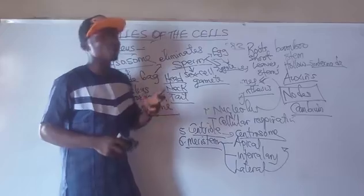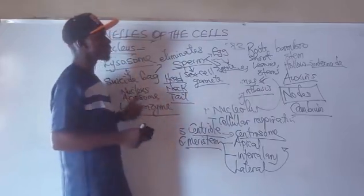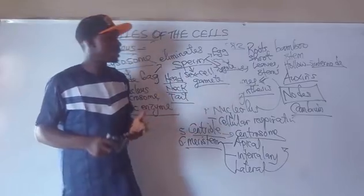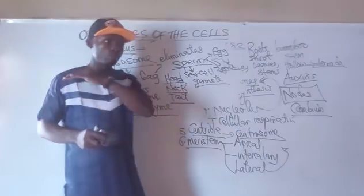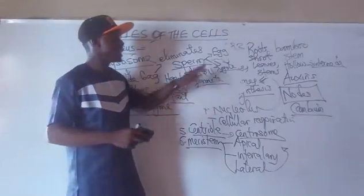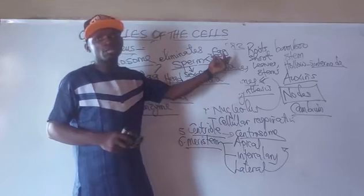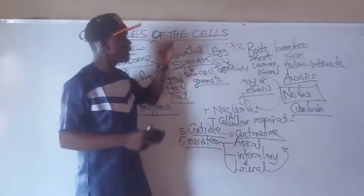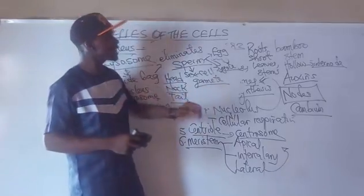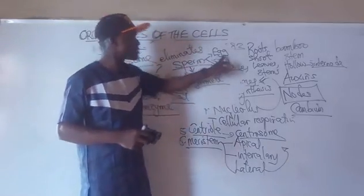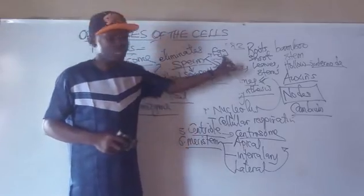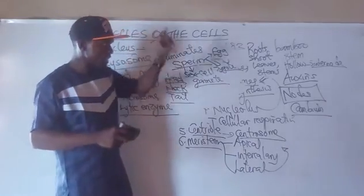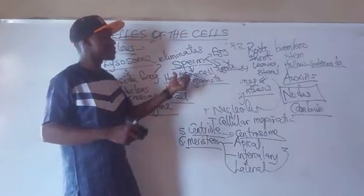That is why a man who always releases very few sperm cannot impregnate a woman, because the Vitelline membrane requires millions of sperms in order to be rendered weak or vulnerable. If the Vitelline membrane of the egg is not overcome, a woman can never be impregnated. Millions of sperms must be produced to dissolve the Vitelline membrane. The work of the lysosome is to help the sperm dissolve the Vitelline membrane to bring about fertilization.